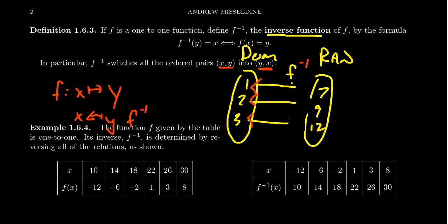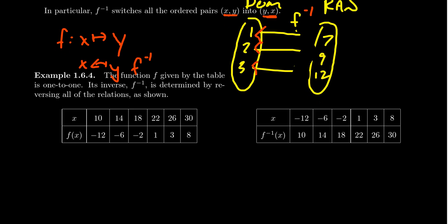Let's give a more specific example here. Let's say a function is given by the following table. Given the function f here, its domain is 10, 14, 18, 22, 26, 30. And so 10 maps to negative 12, 14 maps to negative 6, 18 maps to negative 2, 22 maps to 1, 26 maps to 3, 30 maps to 8, like so.